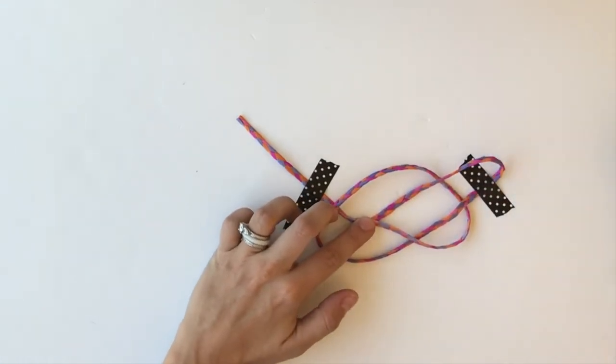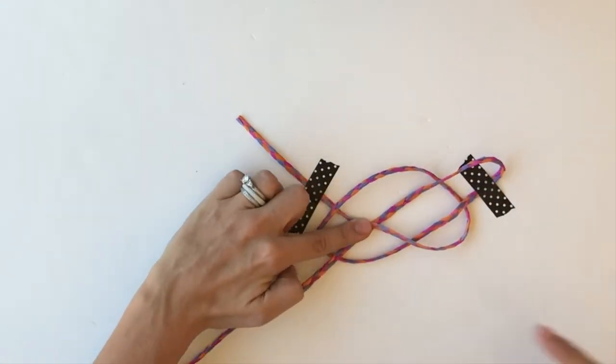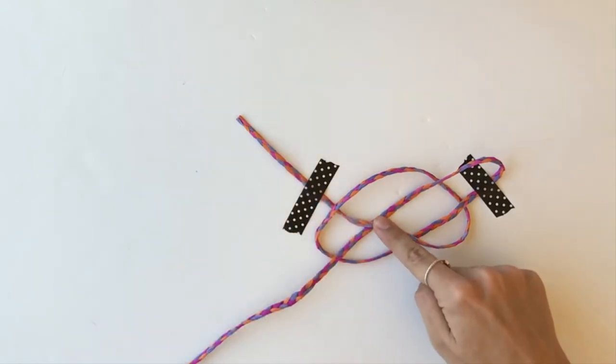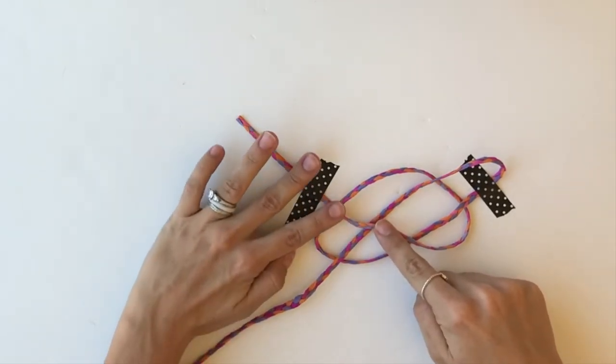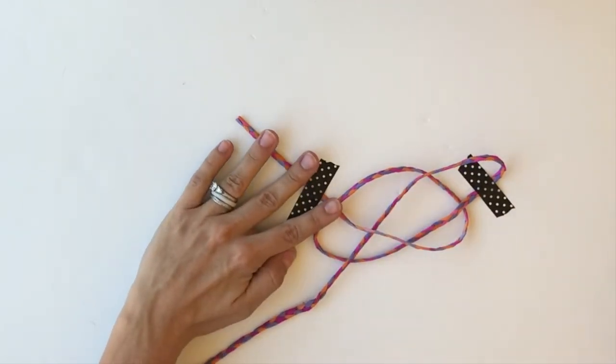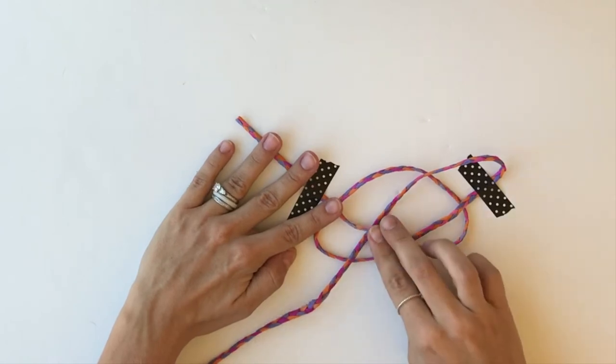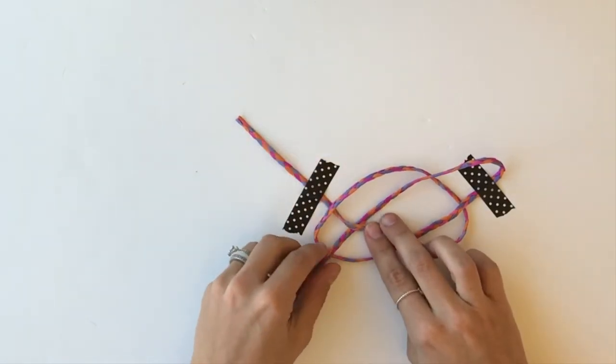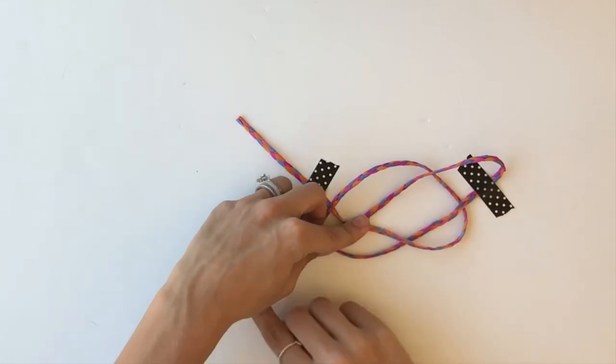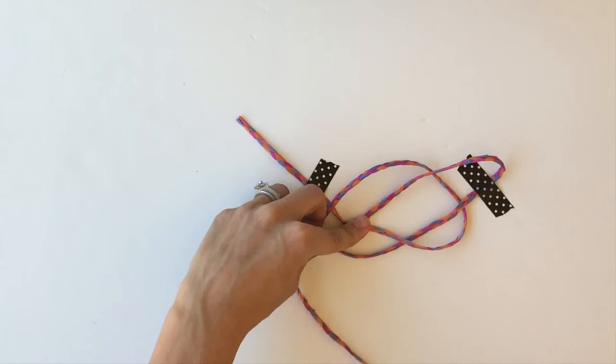You can kind of see how that loop on the right-hand side is sort of freestanding except for the piece of washi. So the next thing I'm going to do is, still working with that same piece, I'm going to go ahead and take it and wrap it back around: under, over, under, over. Now let me show you.